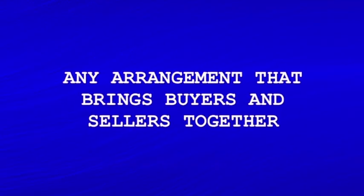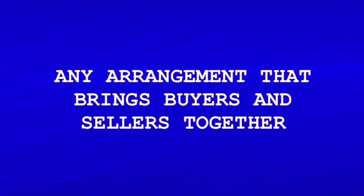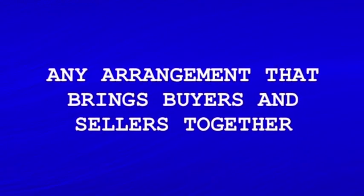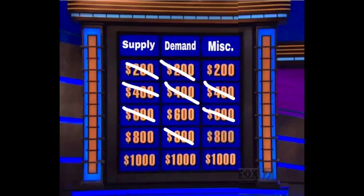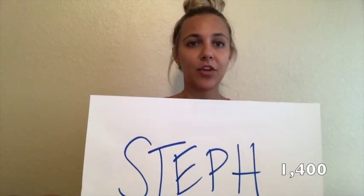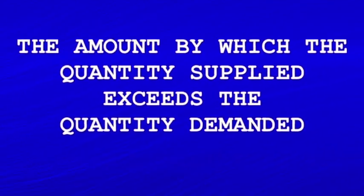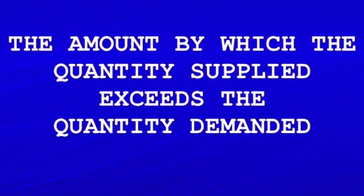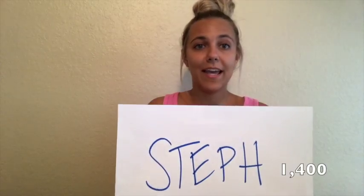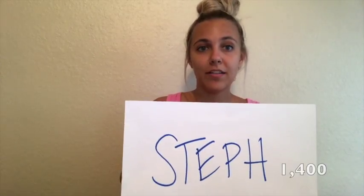Miscellaneous for 600. Any arrangement that brings buyers and sellers together. What is a market? Correct. Miscellaneous for 800. The amount by which the quantity supplied exceeds the quantity demanded. What is a surplus? That is correct.